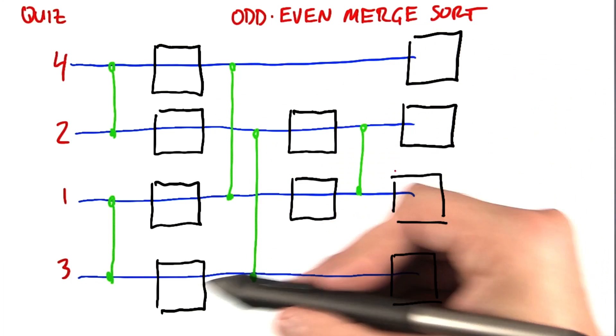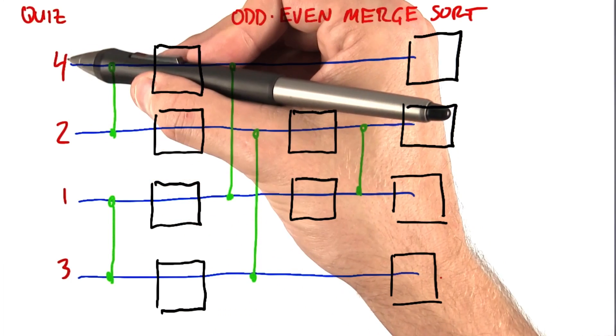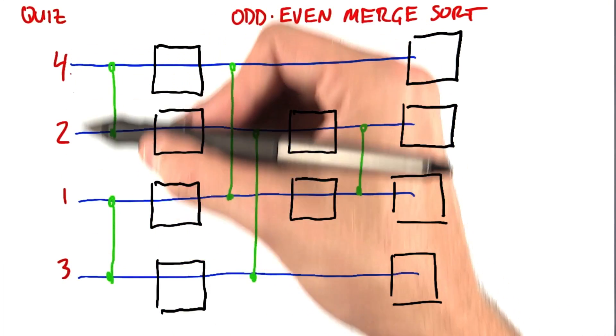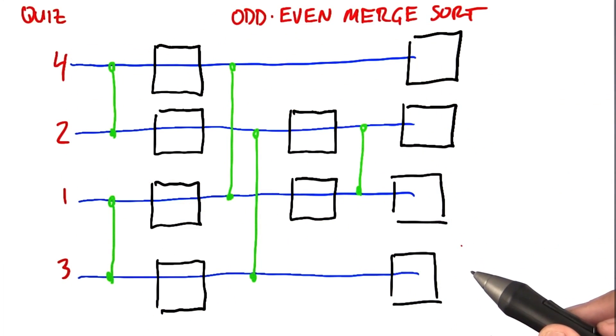So as a quiz, what I'd like you to do is fill in each of the black boxes with the correct numbers to make sure that these four input elements are sorted by an odd-even merge sort.